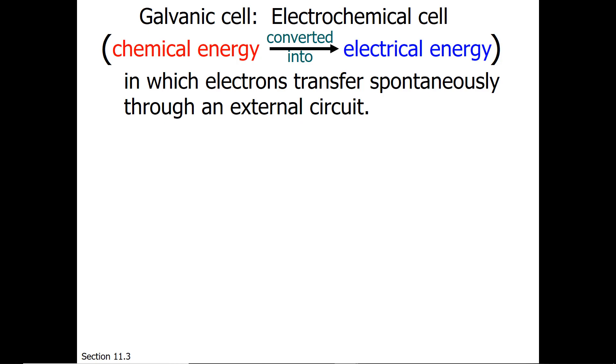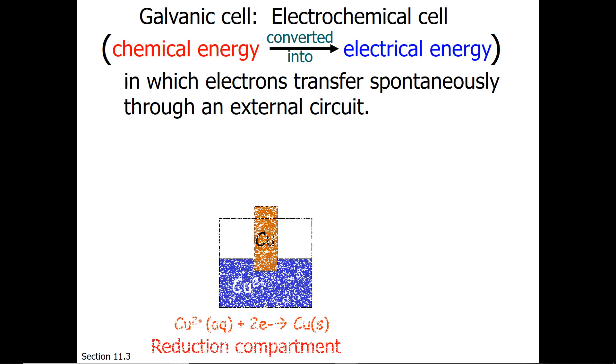Electrochemical cells have four different pieces. First, there is the reduction compartment, where, as you might imagine, the reduction half reaction occurs.